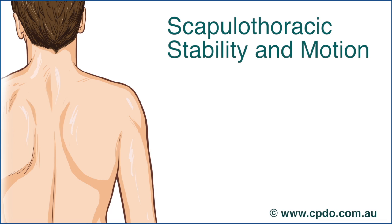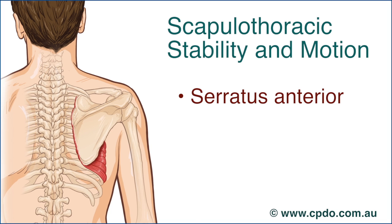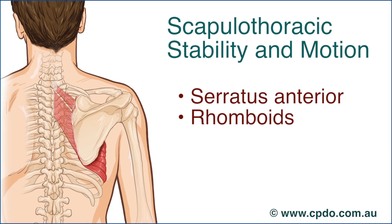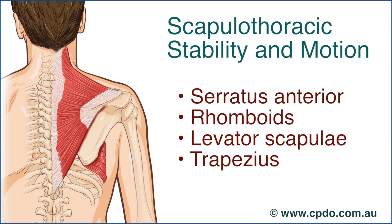The muscles primarily responsible for scapulothoracic stability and motion are serratus anterior, rhomboids, levator scapula, and trapezius.